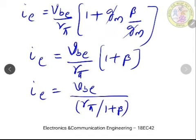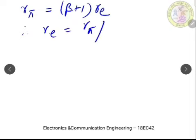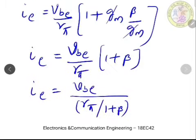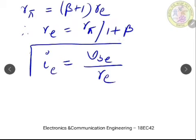There is a relation: Rpi = (beta + 1) × Re, therefore Re = Rpi / (1 + beta). Substituting this in the above equation, finally we get the emitter current component IE = Vbe / Re. So whatever we derived for IB and IC holds good, because again we get IE = Vbe / Re.